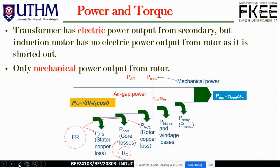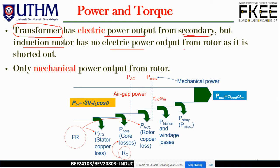Some description of power and torque, particularly in the induction machine. A transformer has electrical power output from the secondary. But for an induction motor, there is no electric power from the rotor as it is shorted out. So this is the difference between a transformer and an induction machine. Only mechanical power output comes from the rotor - this is the function of a motor, where we have electrical power as input and mechanical power as output.